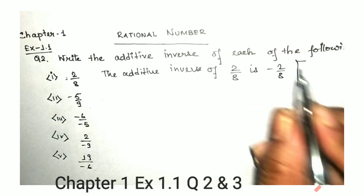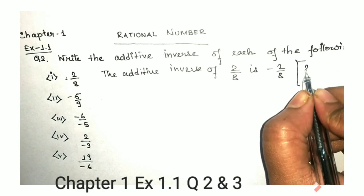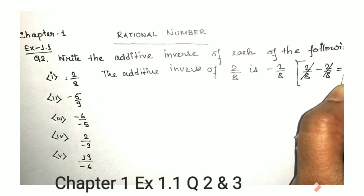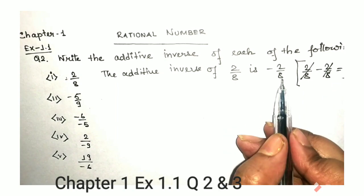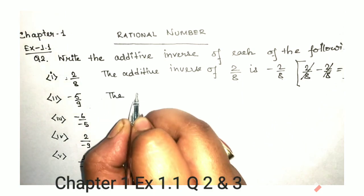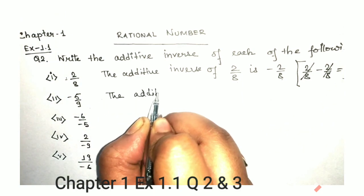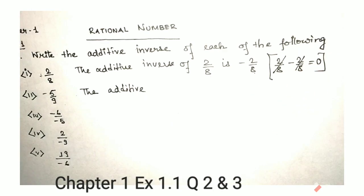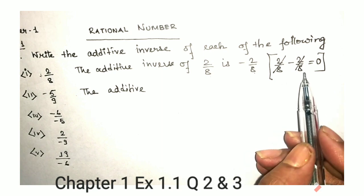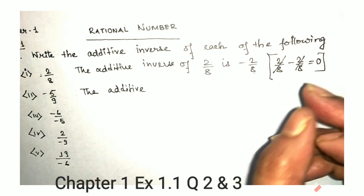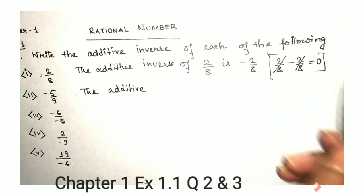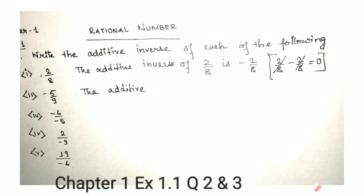Now we will just check — if we add these two, whether we are getting 0 or not. See if we add these two we get 0, so that means this is the additive inverse. I have just shown you this so that you can understand how to verify that one number is the additive inverse of another number. If we add these two and get 0, then we can say that one number is the additive inverse of another.